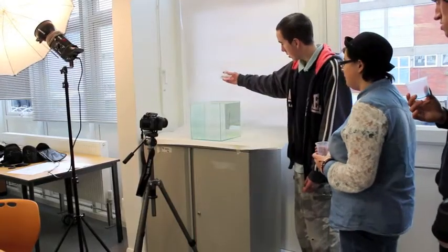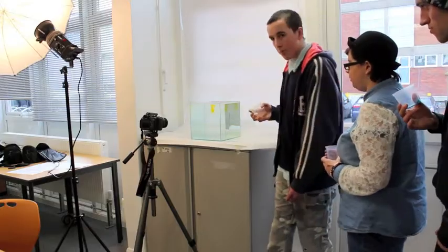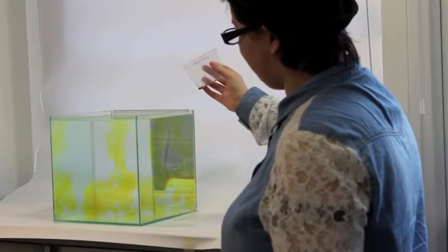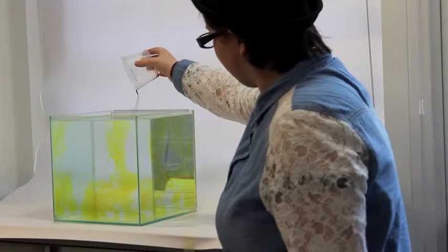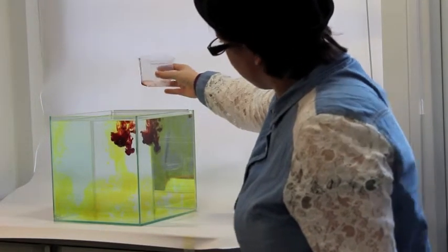We took it in turns to pour the ink into the tank one by one. We timed 45 seconds between each colour being poured to allow for enough time for the colours to swirl and the chosen song to play.